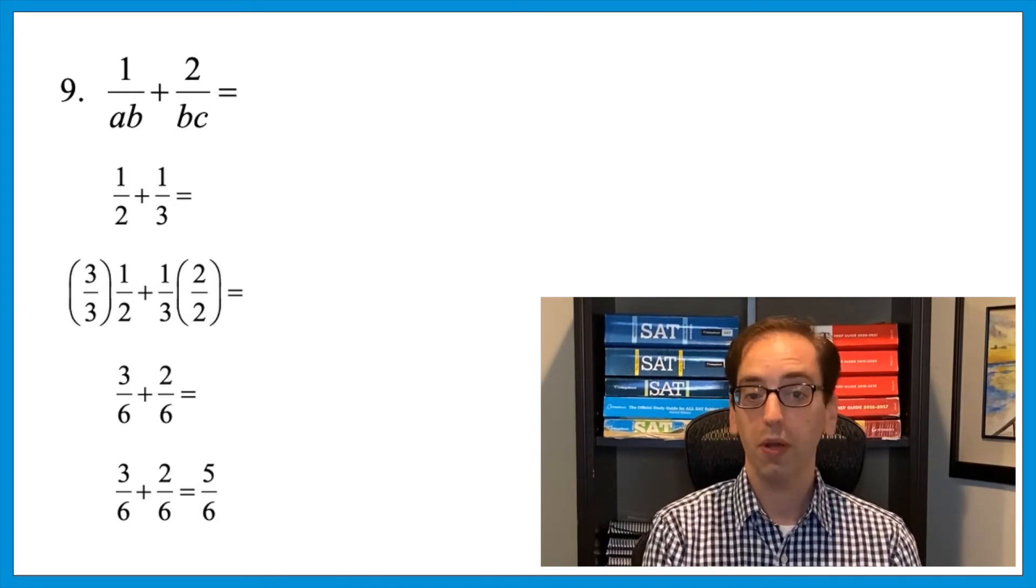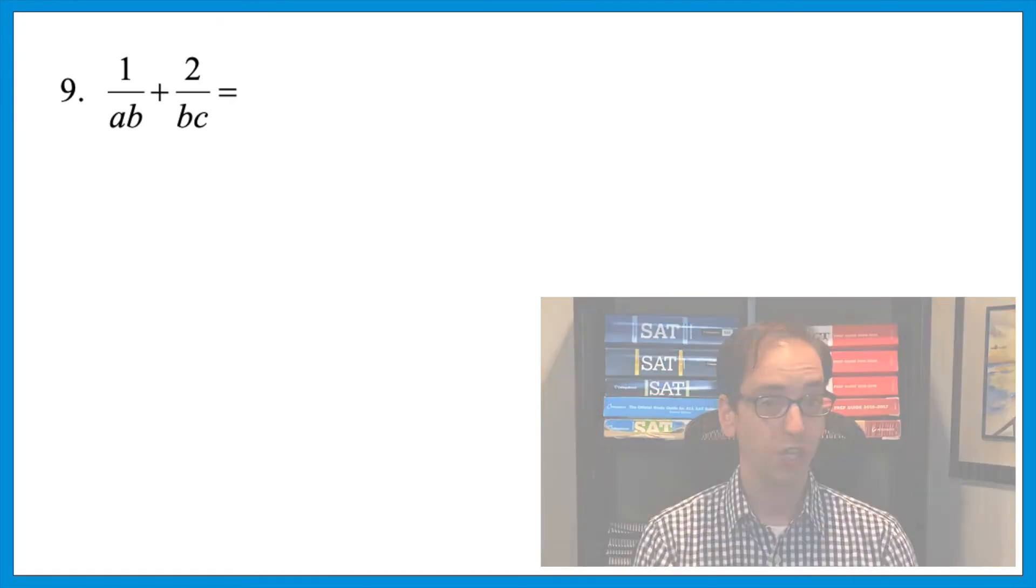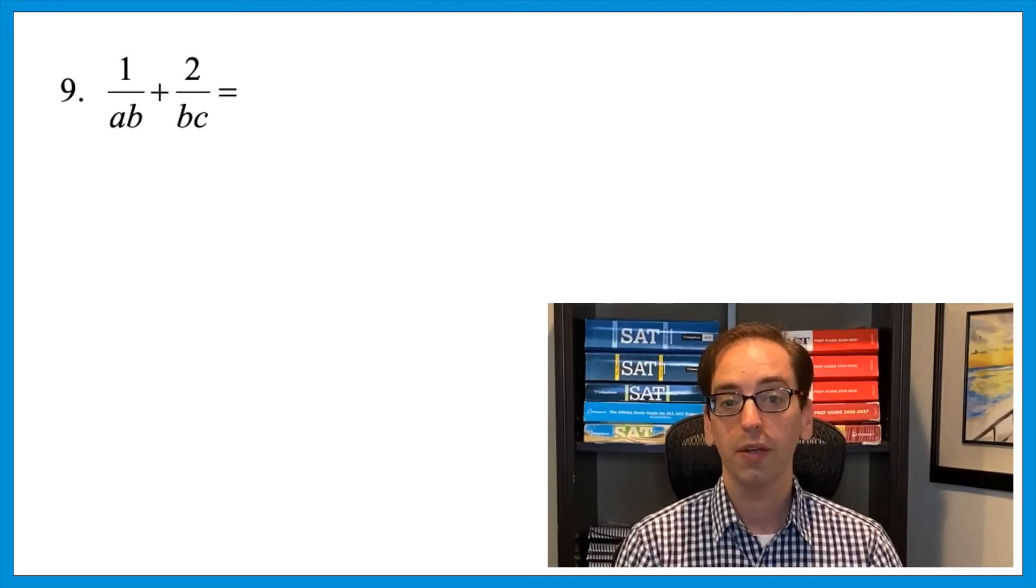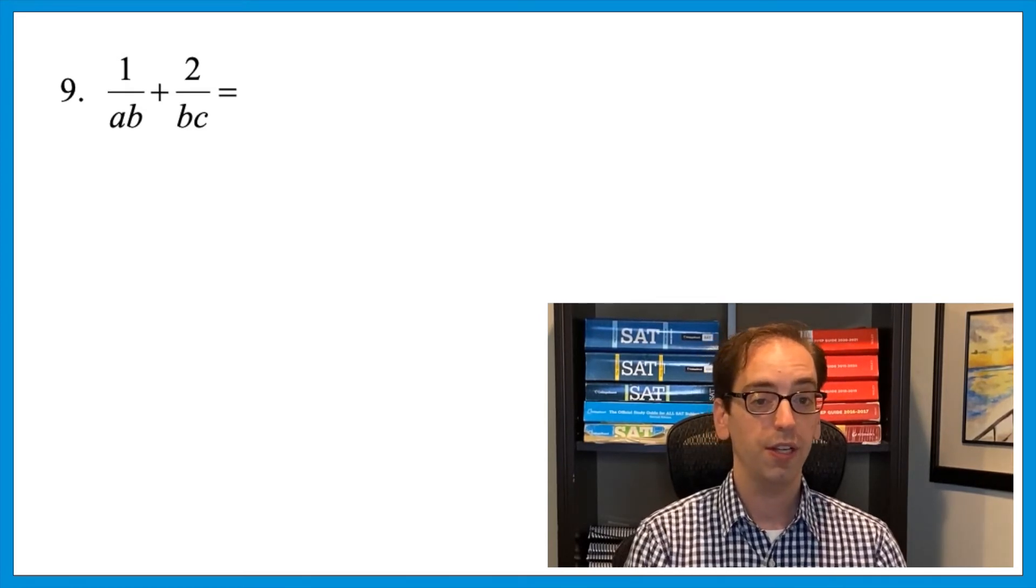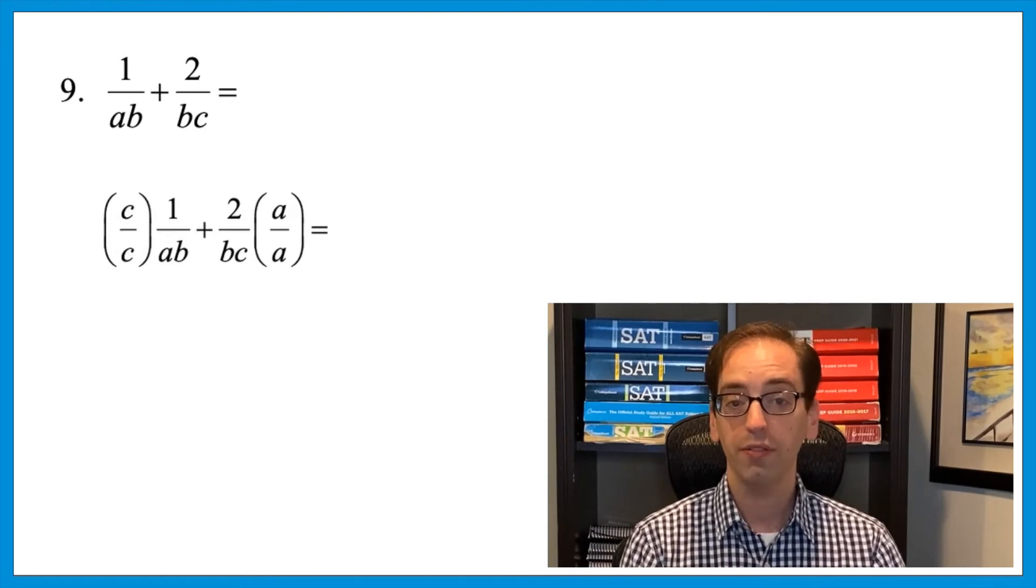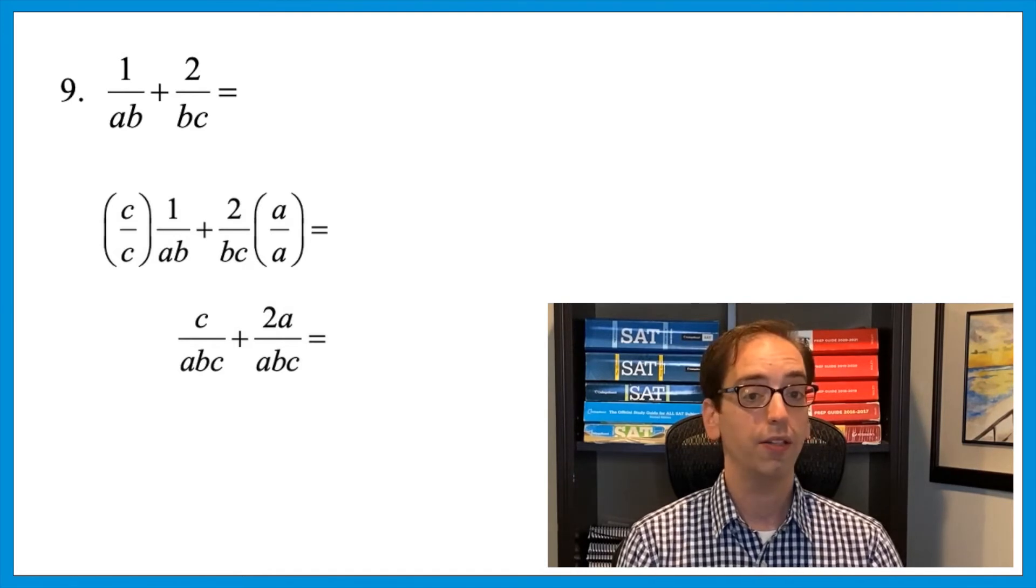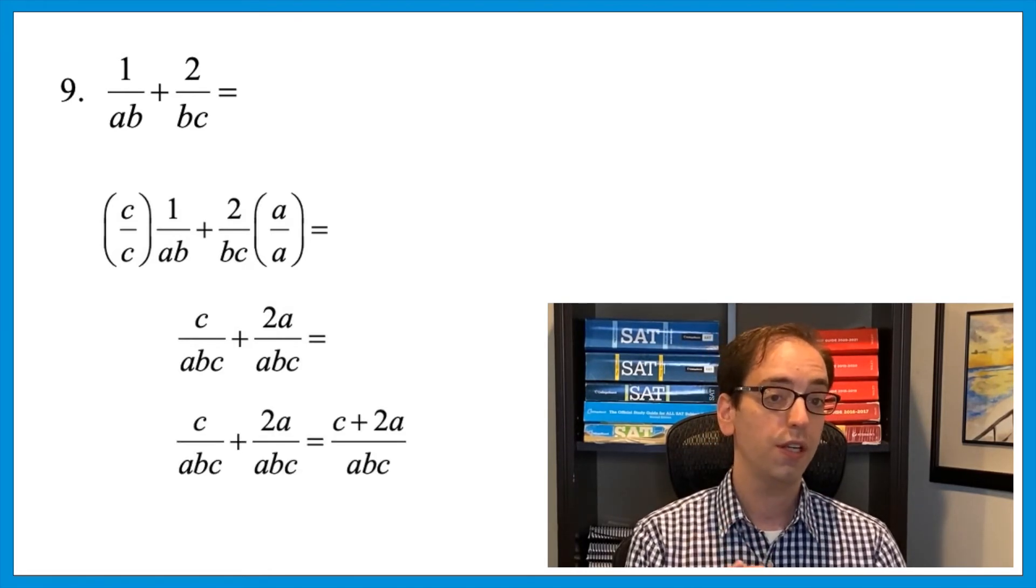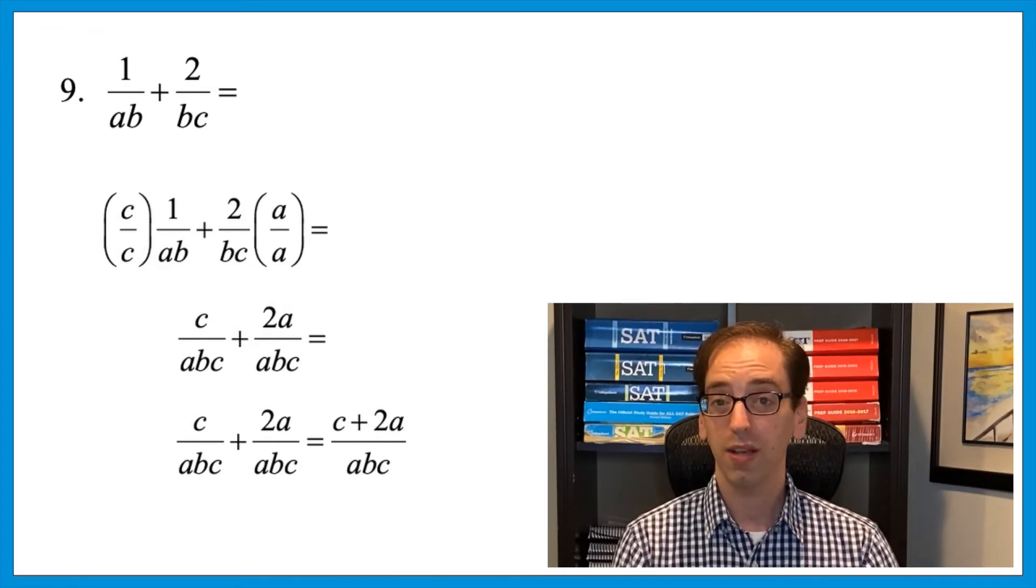So let's tie that back into the original question now. 1 over ab plus 2 over bc. Press pause and give it a shot. We can use that same principle now to get common denominators here. Of ab and bc, the common denominator would be abc. That means that the first fraction needs c and the second fraction needs a. So multiplying by c over c and a over a would now give you c over abc plus 2a over abc. And now we can add. Combining the numerators would give you c plus 2a over abc. Notice, if you got stuck with variables, we can pretend instead that we have numbers. That tells you what the underlying concept needs to be.